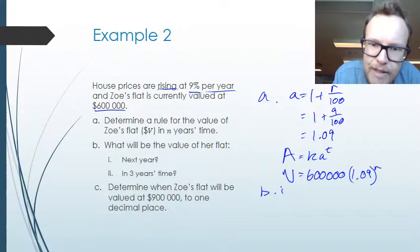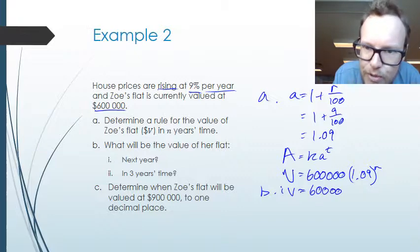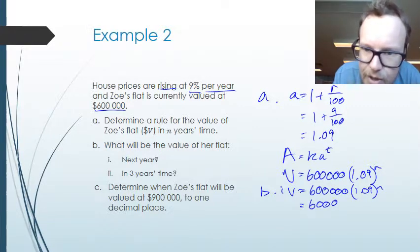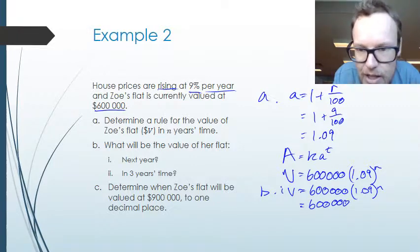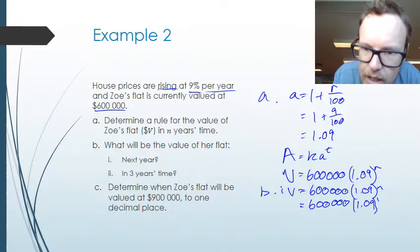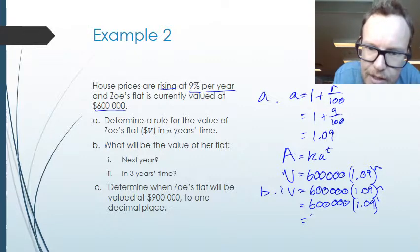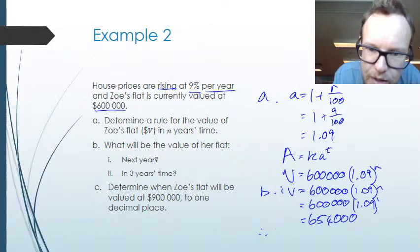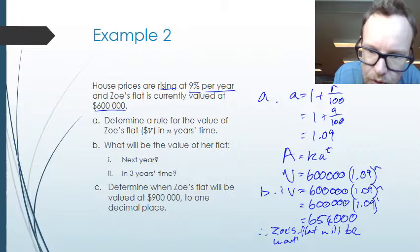For part b(i): what is the value of Zoe's flat in one year's time? Substituting n equals 1 into our formula V equals 600,000 times 1.09 to the power of 1, we get that Zoe's flat will be worth $654,000 after one year.